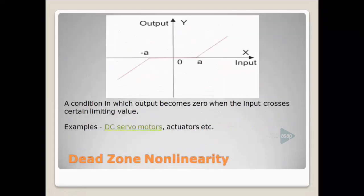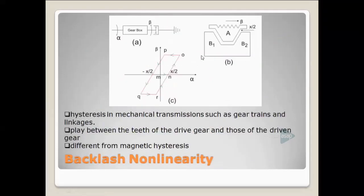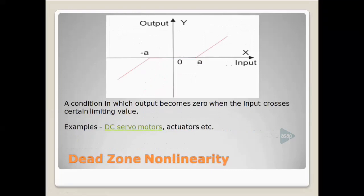Dead zone non-linearity: when the input crosses a particular limit, only then is output produced. As the input increases from zero, there is no change in output up to a particular value — from -a to +a there is a dead zone where output is zero. Only after the input crosses point a does the output appear. This dead zone condition is normally seen in DC servo motors and different types of actuators.